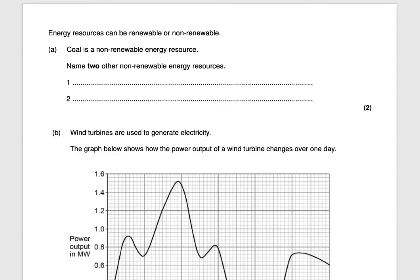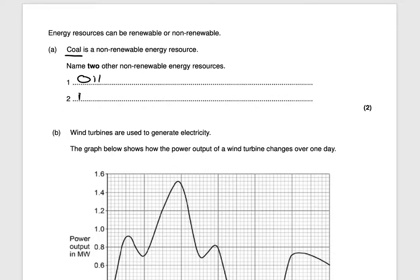Hi everyone and welcome to our video on some exam questions related to energy. Our first exam question states: energy resources can be renewable or non-renewable. Coal is a non-renewable energy resource — name two other non-renewable energy resources. Two other examples of non-renewable energy resources — remember we will eventually run out of these — include oil and natural gas. You could have also had nuclear energy. That would be worth two marks.